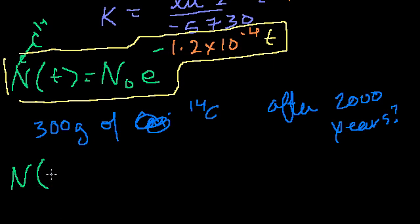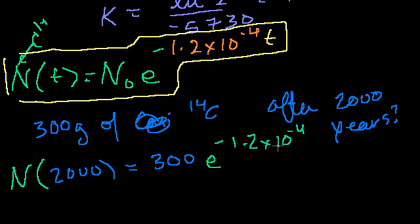Well, I just plug into the formula. N of 2,000 is equal to the amount that I started off with, 300 grams, times e to the minus 1.2 times 10 to the minus 4 times 2,000.